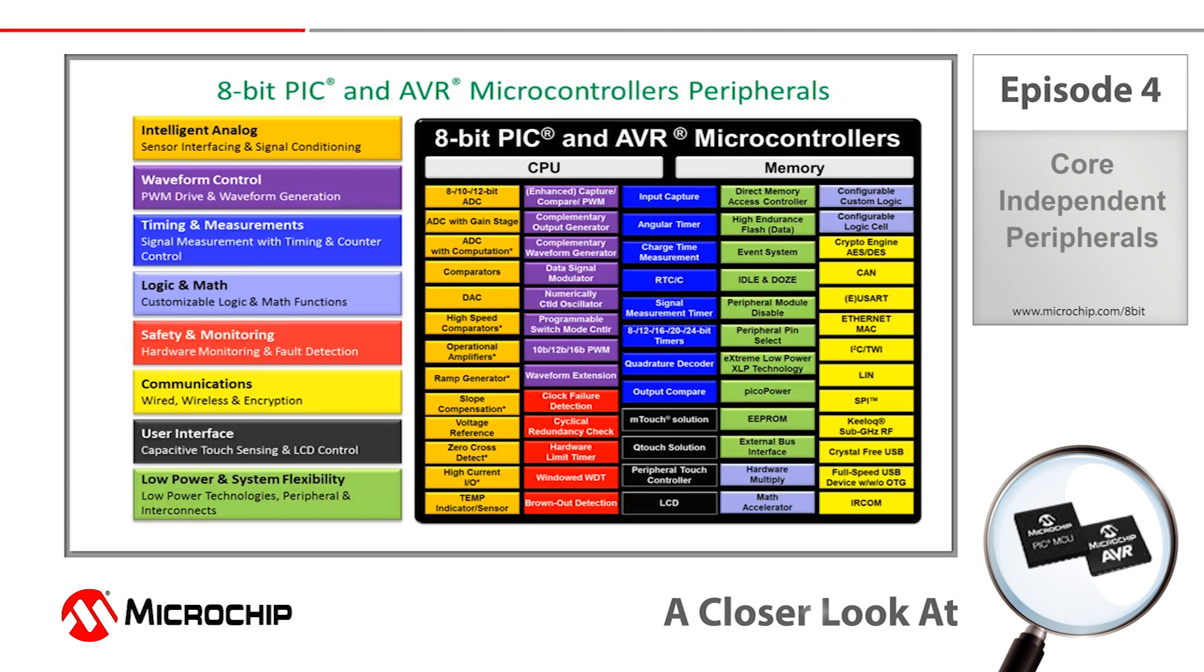You may know that both PIC and AVR microcontroller architectures are loaded with peripherals. Many of these are what are called Core Independent Peripherals or CIPs for short. These peripherals have been developed to automate certain tasks that were traditionally executed by the Central Processing Unit based on instructions that the developer wrote in software.